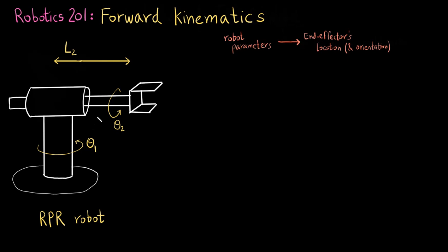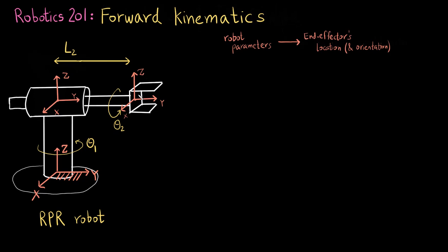When we are talking about the location and orientation of something, we need to express it with respect to some reference frame, and that is the fixed reference frame. Most of the time we fix the reference frame at the base of the robot. I have drawn this fixed reference frame at the base of the robot and the end effector frame at the end effector. This end effector frame is my moving frame M, and this is my fixed frame F.